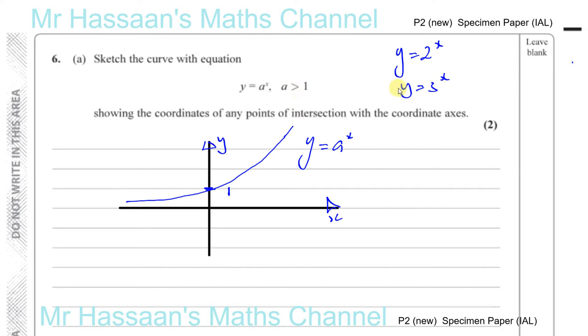If a was less than 1, for example it would be a half to the power of x, then that would be like 2 to the power of minus x. Now that would be like a reflection of this in the y axis. It would look like this, which is something that models decay. That's why they have a is greater than 1. When a is greater than 1, it will always have this type of shape.